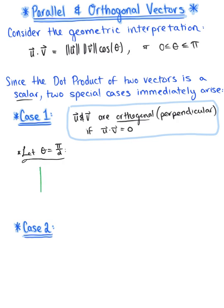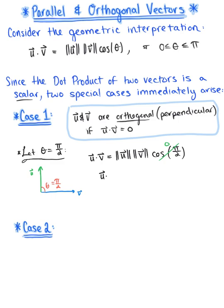Graphically, we have vector u and vector v intersecting at a right angle, so theta is pi/2. Plugging this into the geometric interpretation: vector u dot vector v equals the magnitude of vector u times the magnitude of vector v times cosine of pi/2. We know that cosine of pi/2 equals 0, so vector u dot vector v equals 0 when theta is pi/2, which confirms that vector u and vector v are perpendicular — a nice graphical confirmation of what we're observing.